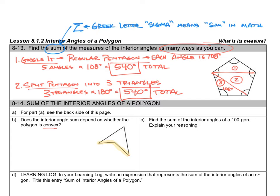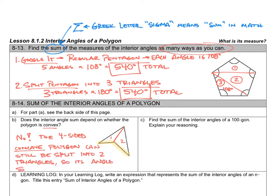But let's see if we can split this thing up into triangles. We sure can. We can split it up into two triangles just like we did before. The four-sided concave polygon can still be split into two triangles, so its angle sum is still two times 180 or 360 degrees.